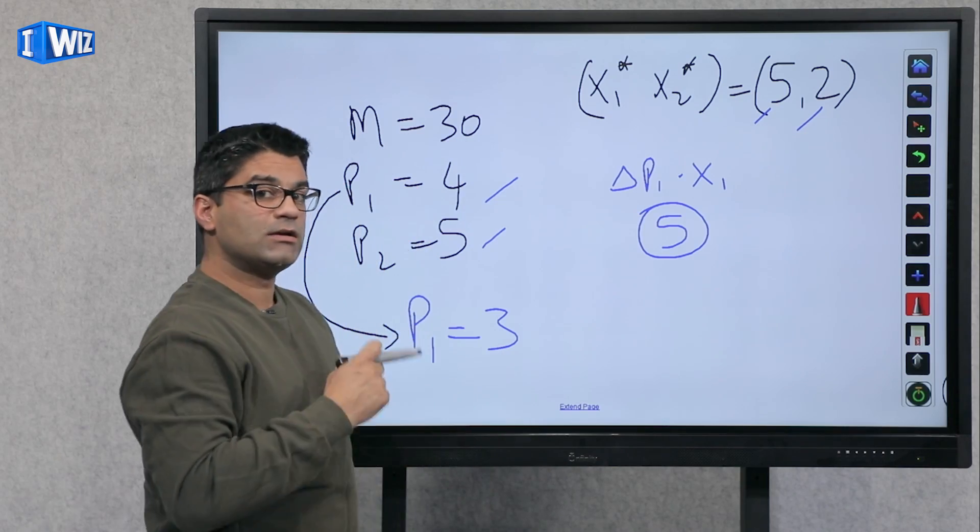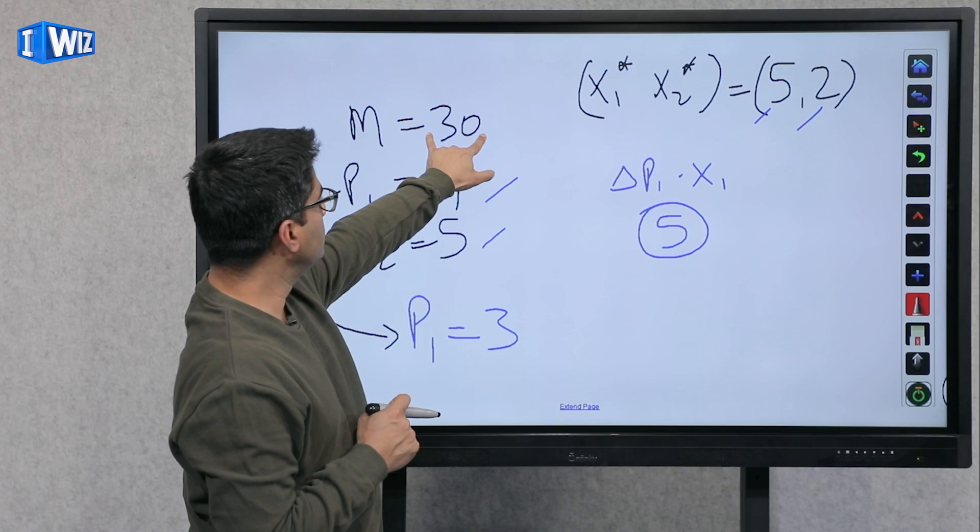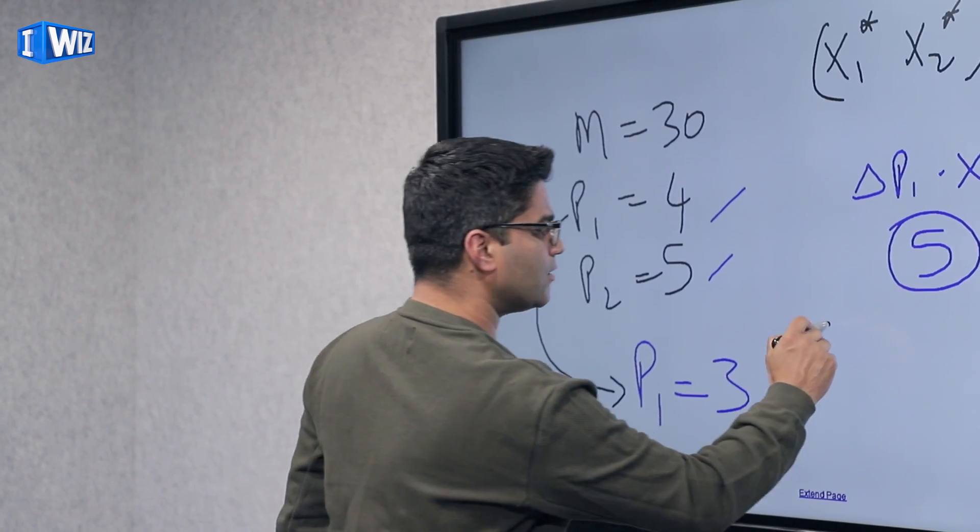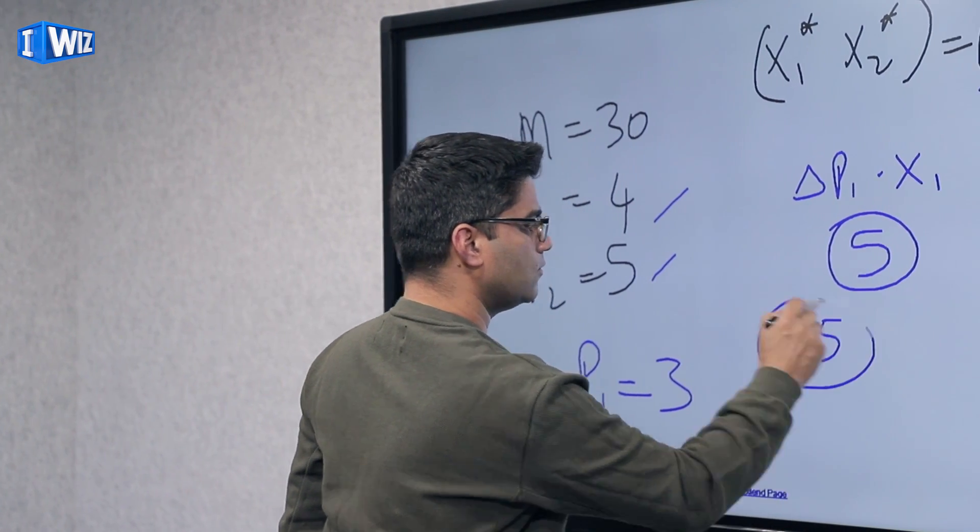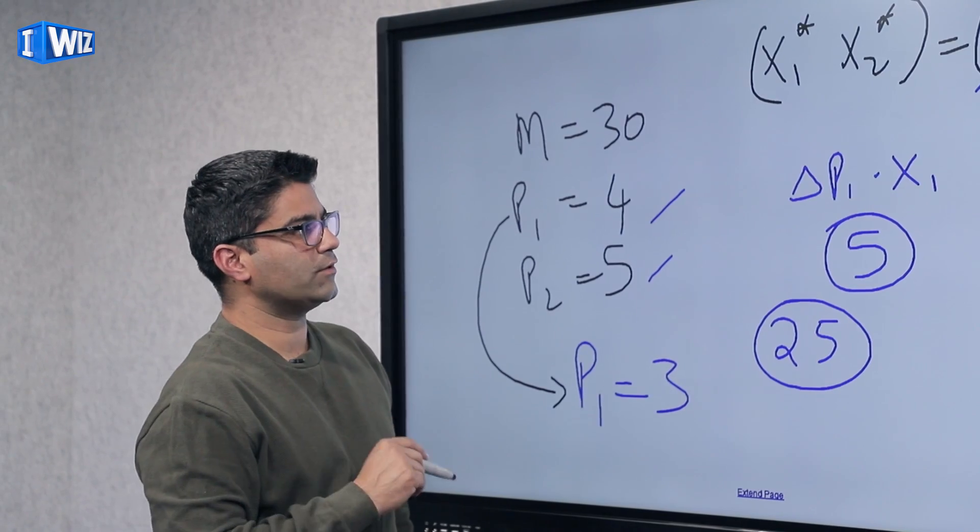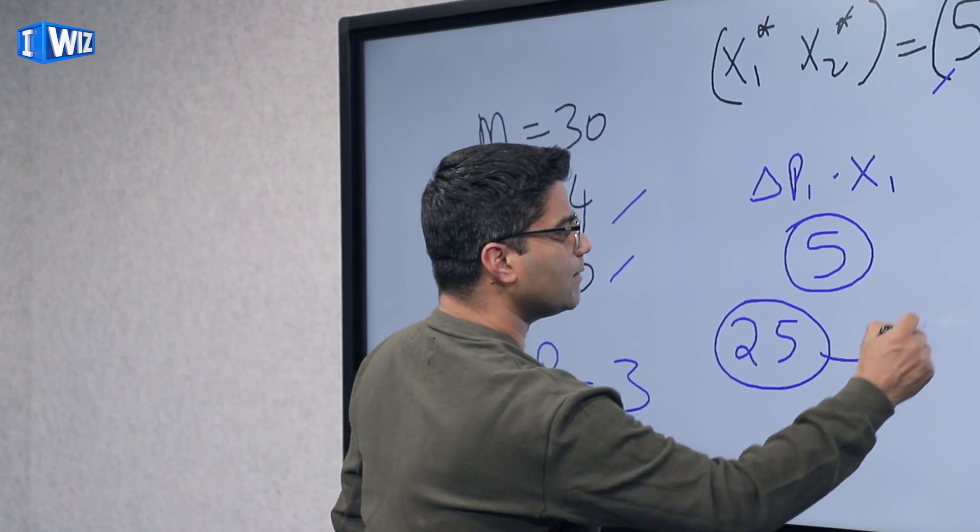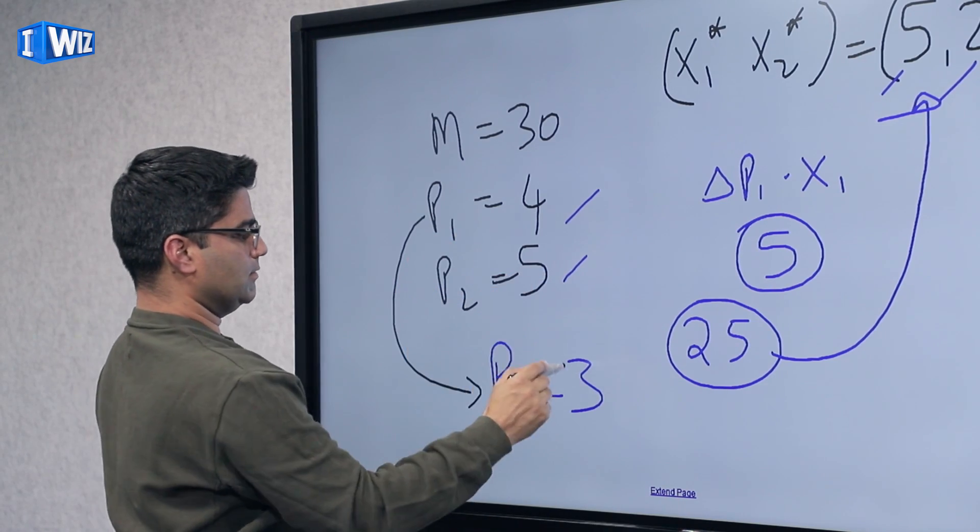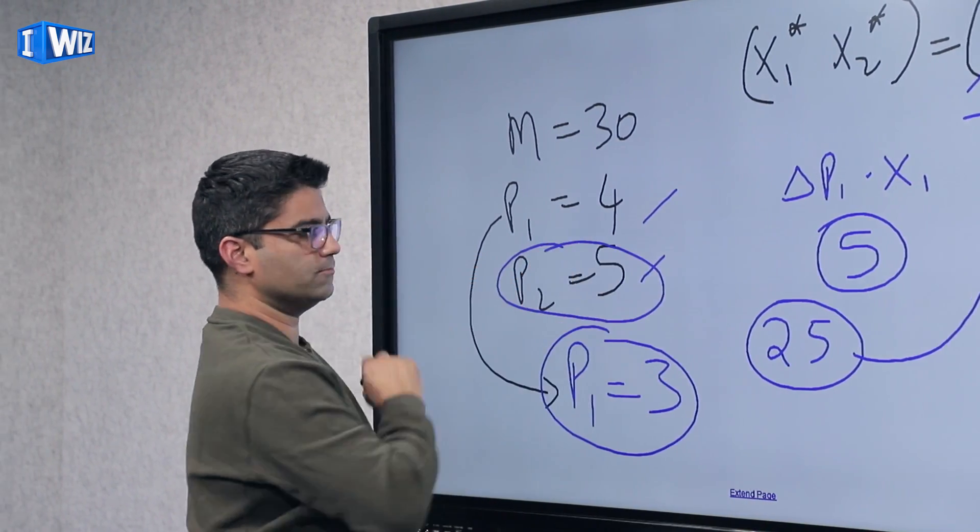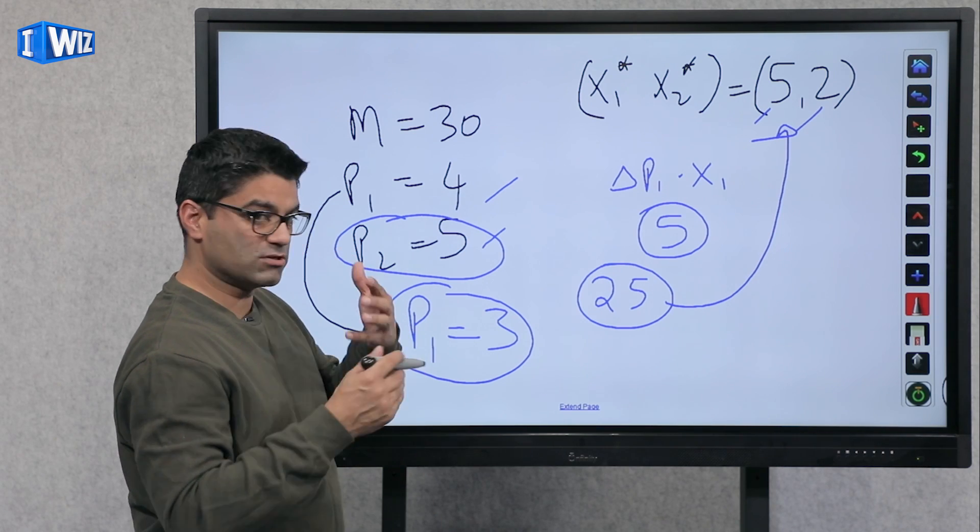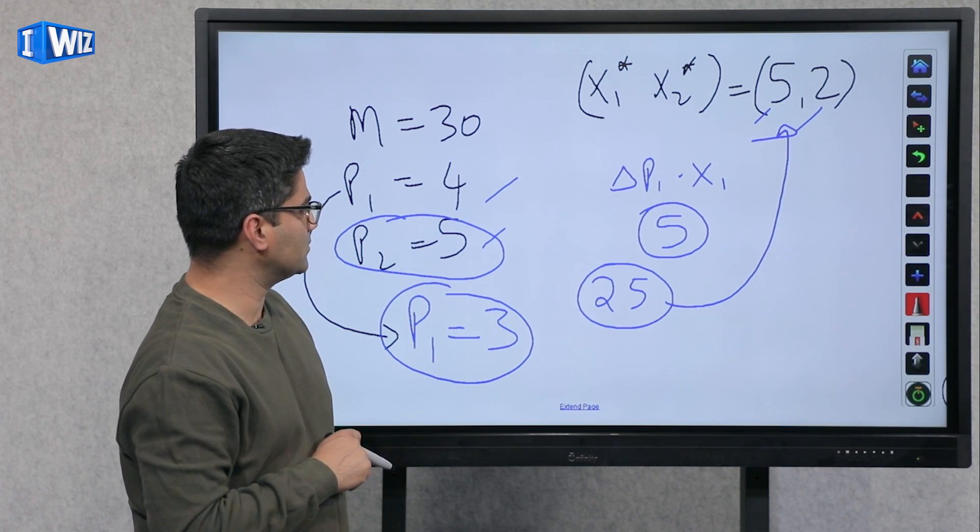So if you take five away from this person in terms of their income, if you take five rupees, five dollars away from them, now their income is 25. And think about it, I'm not going to do it, you're going to do it in the next couple of seconds. Are you able to afford this bundle given the new price of P1 and the same old price of P2? So I'm going to give you a second, do it, or pause the video and do it, and then come back to when I'm doing the solution.